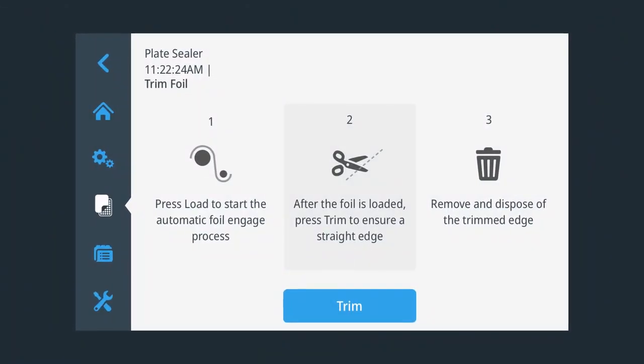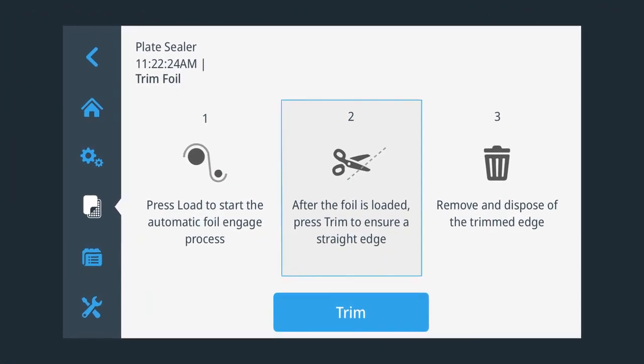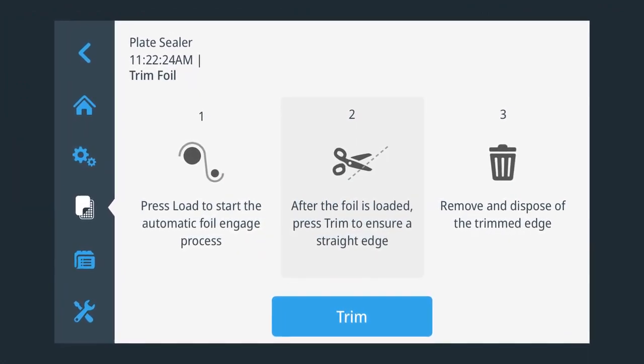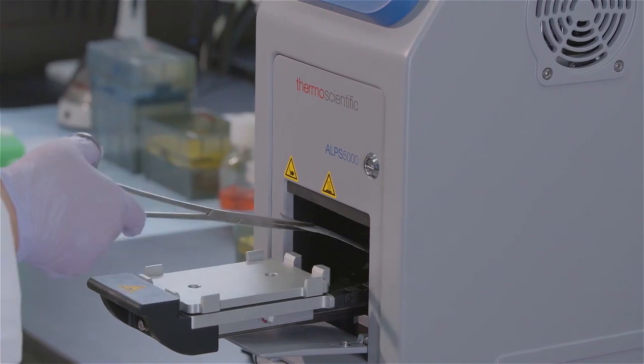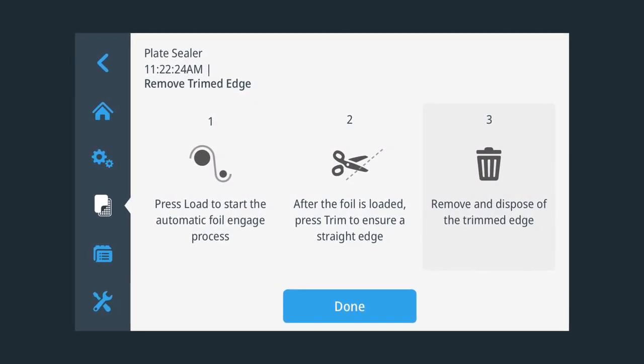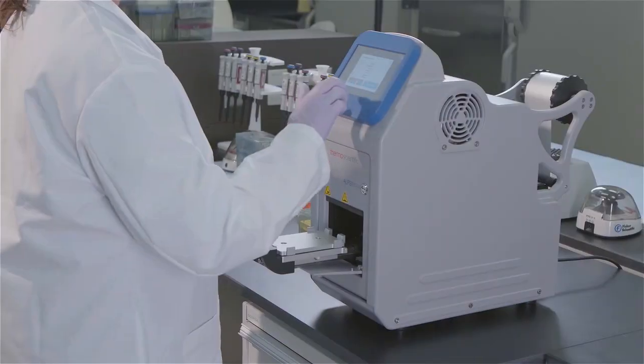Tap trim on the touch screen. Once the unit has trimmed the foil, use the provided tongs to remove any excess. Tap done on the touch screen. The unit is now ready for use.